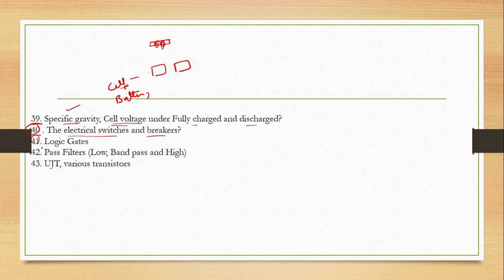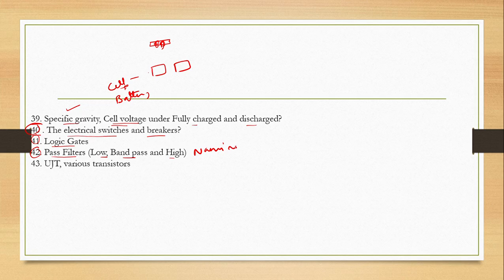Then we have logic gates — what are their functions? And pass filters: low pass, band pass, high pass filter — just identify the namings. UJT and various resistances — these are very important topics.